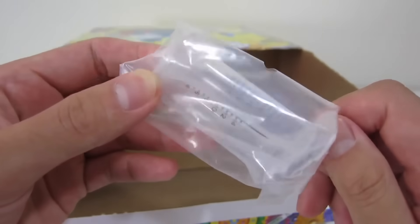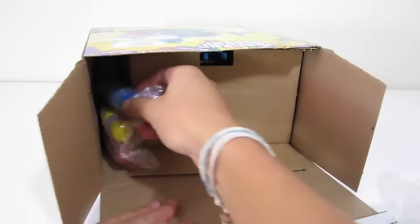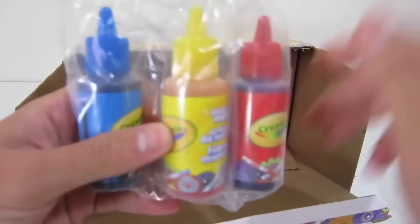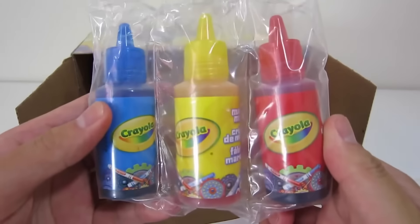These are the two tubes that we'll be using to make our colors. And here are the three colors that we'll be using: blue, yellow, and red.